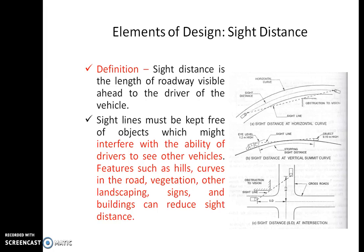What is sight distance? Sight distance is the length of roadway visible ahead to the driver of a vehicle. We have taken three cases. This length should be maintained for any type of horizontal or vertical curve, so that this length is sufficient for a driver to take an action.